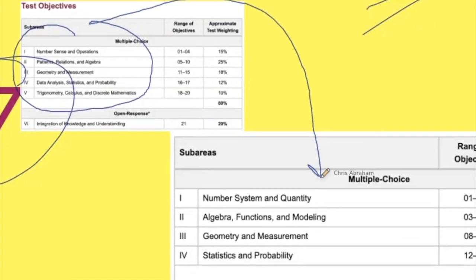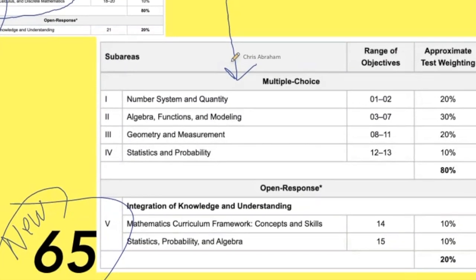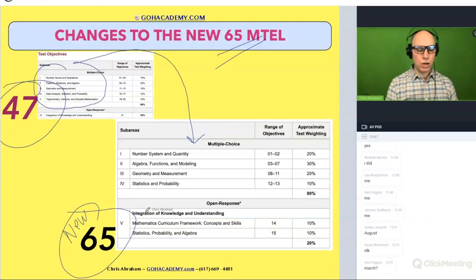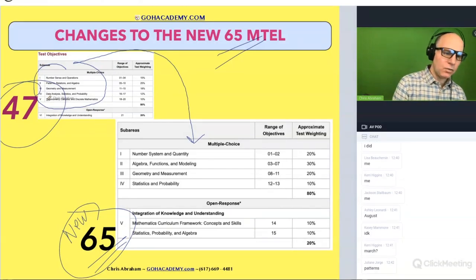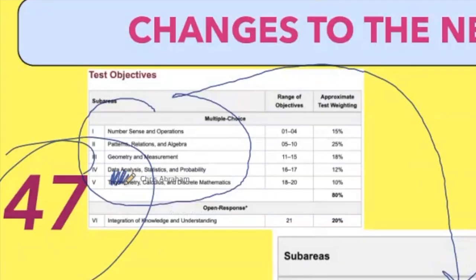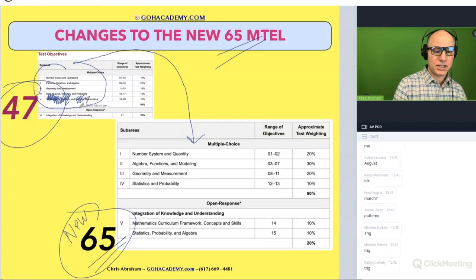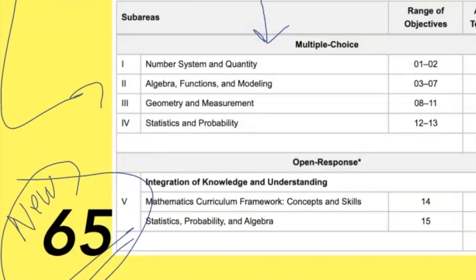When they changed it up, they got rid of some things. What is something that is no longer on the 65? Well, they got rid of a lot of this trigonometry stuff, right? Do you see that? And calculus and discrete math—that's actually not there anymore. Can you see that?